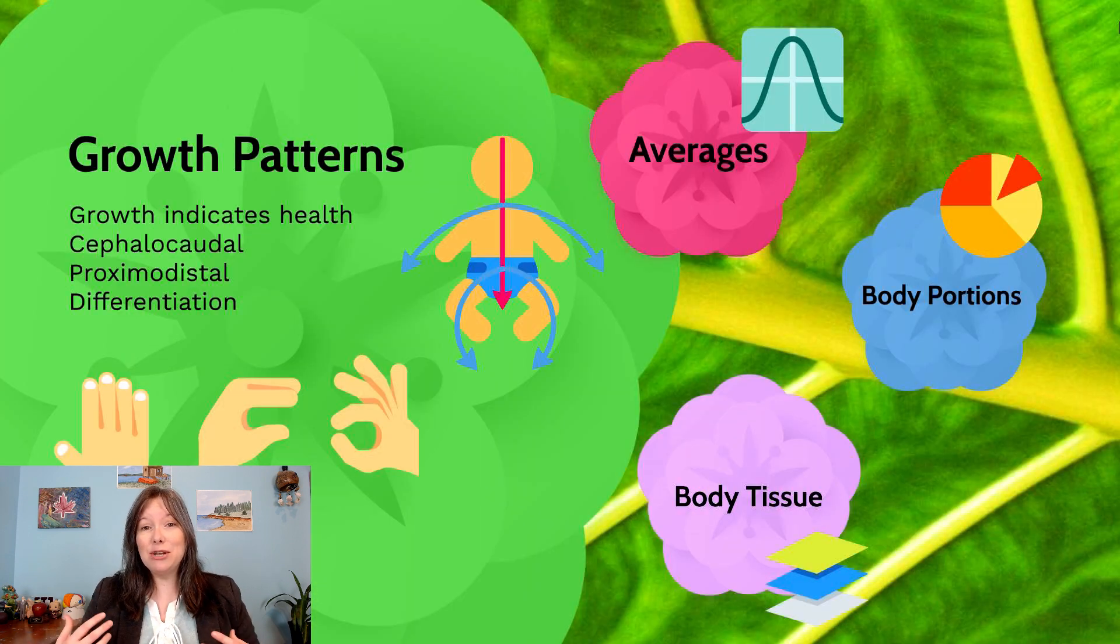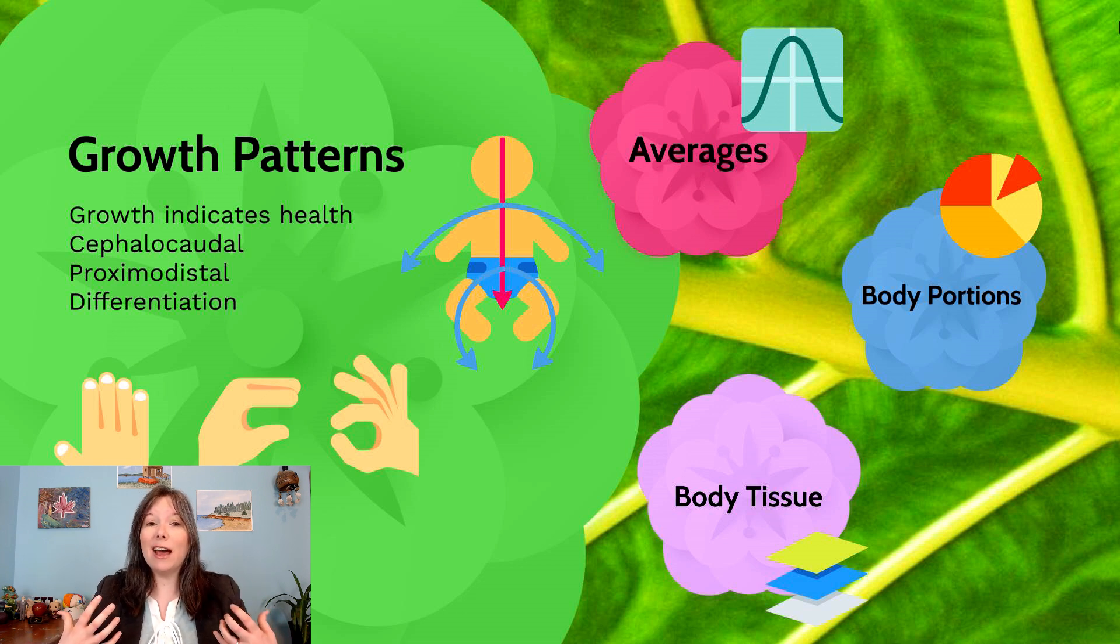Now for lots of reasons this unit will overlap with the science of pediatrics and that's because as developmental psychologists we understand that growth indicates health and physical health can be a major marker of our mental and psychological health. So because of this, especially in infancy and young childhood, we are very interested in the physical growth patterns of an offspring. And so there's three main patterns we tend to pay attention to in developmental psychology.